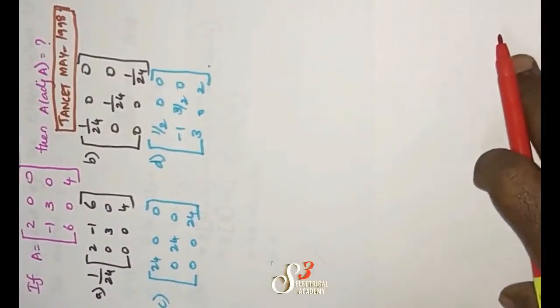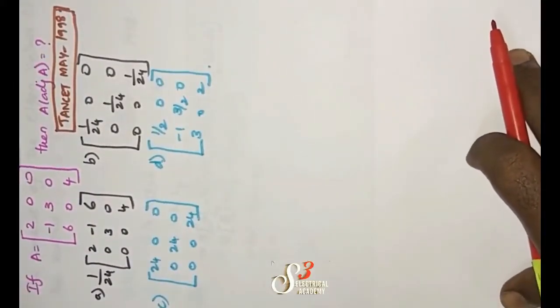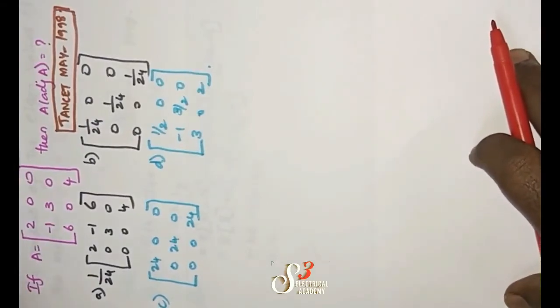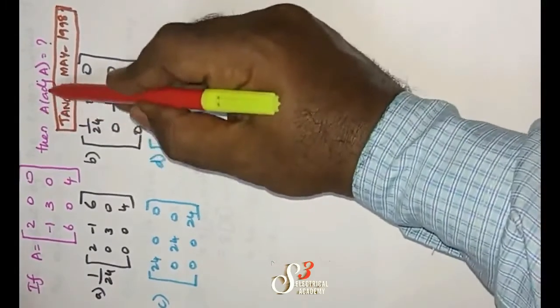This answers a May 1998 question. A 3 by 3 square matrix is given. Then we have to find out the matrix A into its adjoint.